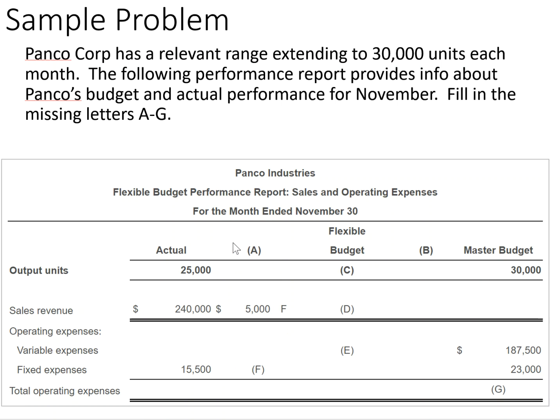The first thing we need to do is fill in the column titles. The difference between the actual and the flexible budget is called the flexible budget variance, and the difference between the flexible budget and the master budget is called the volume variance.